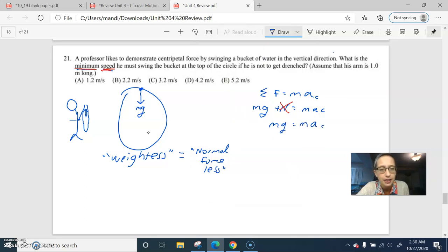m a_c, or m's cancel out. g - we'll plug stuff in in a second - so you have v squared over r. g times r equals v squared. The square root of gr equals v. And g is 10 and the radius is 1, so the square root of 10 ends up being the answer.